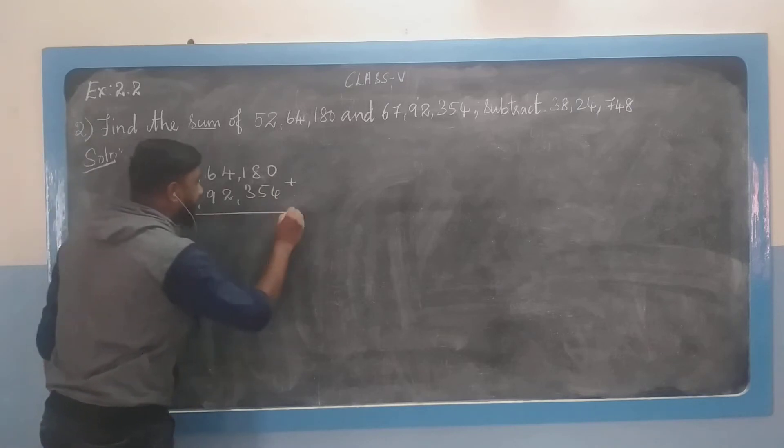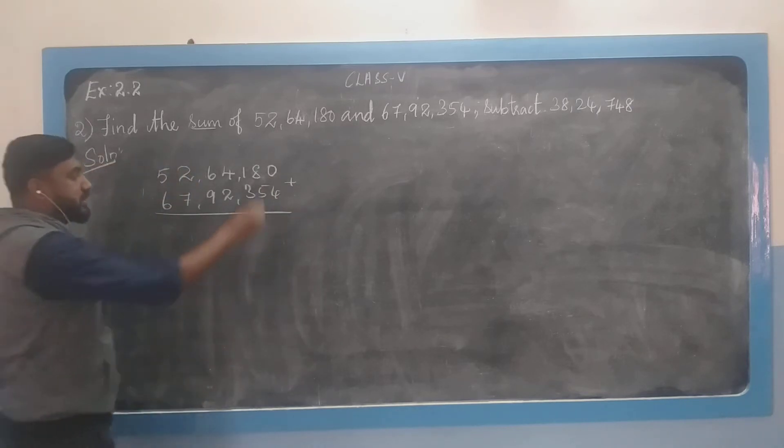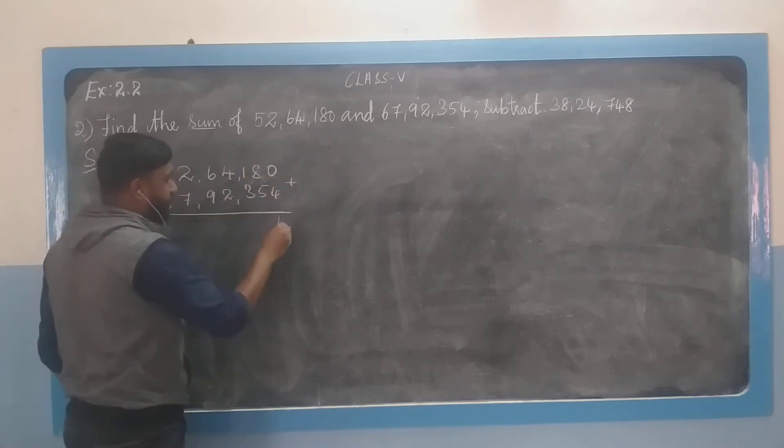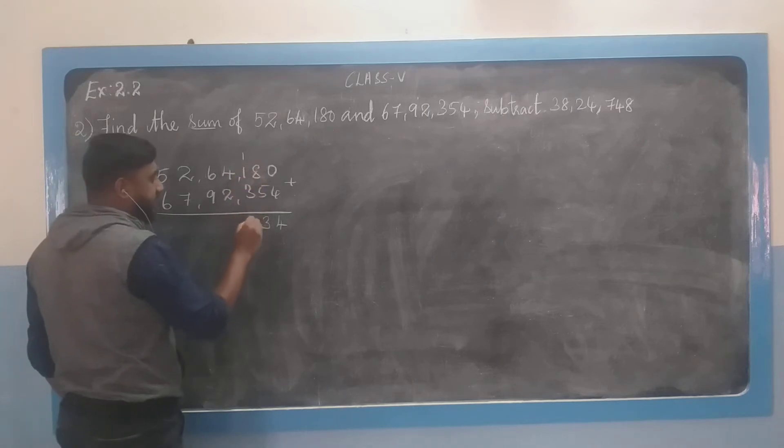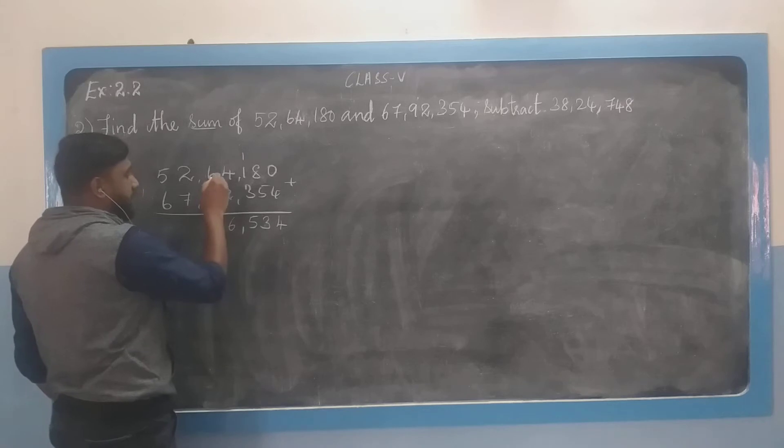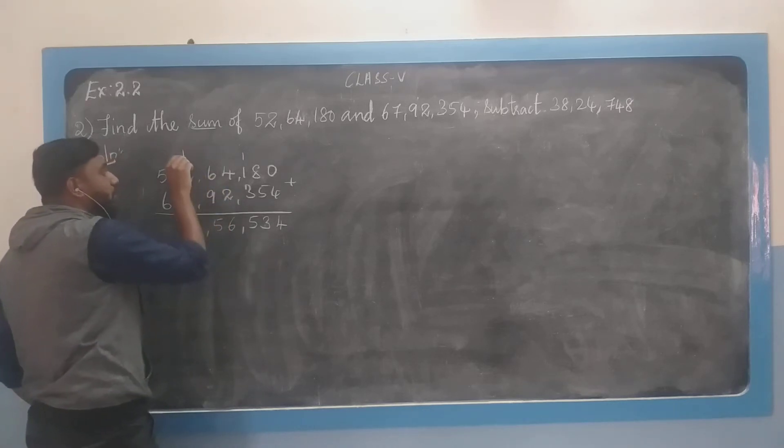We need to add these two numbers. What is 0 plus 4? 4. 8 plus 5, 13. Write 3, carry 1. 1 plus 1 is 2, 2 plus 3 is 5. 4 plus 2 is 6. 6 plus 9 is 15, so 5, 1 remainder.